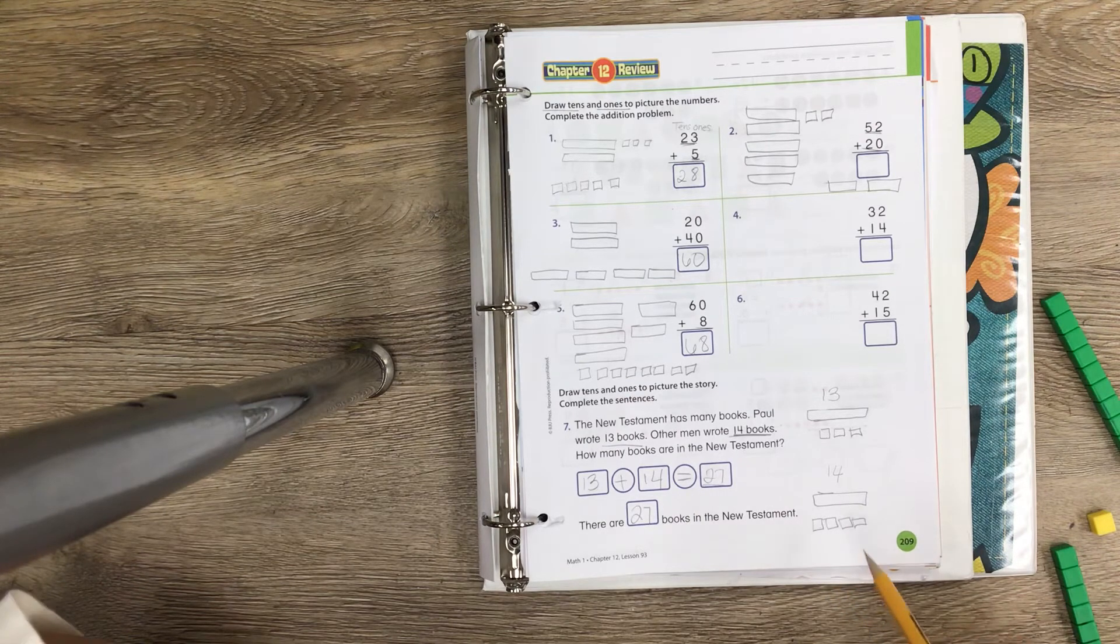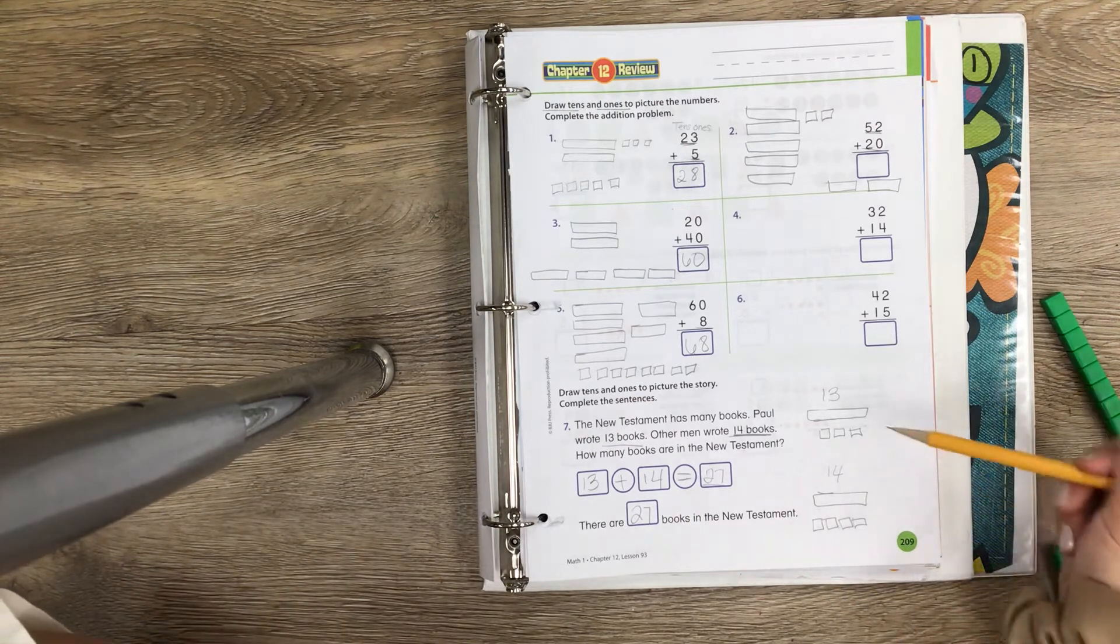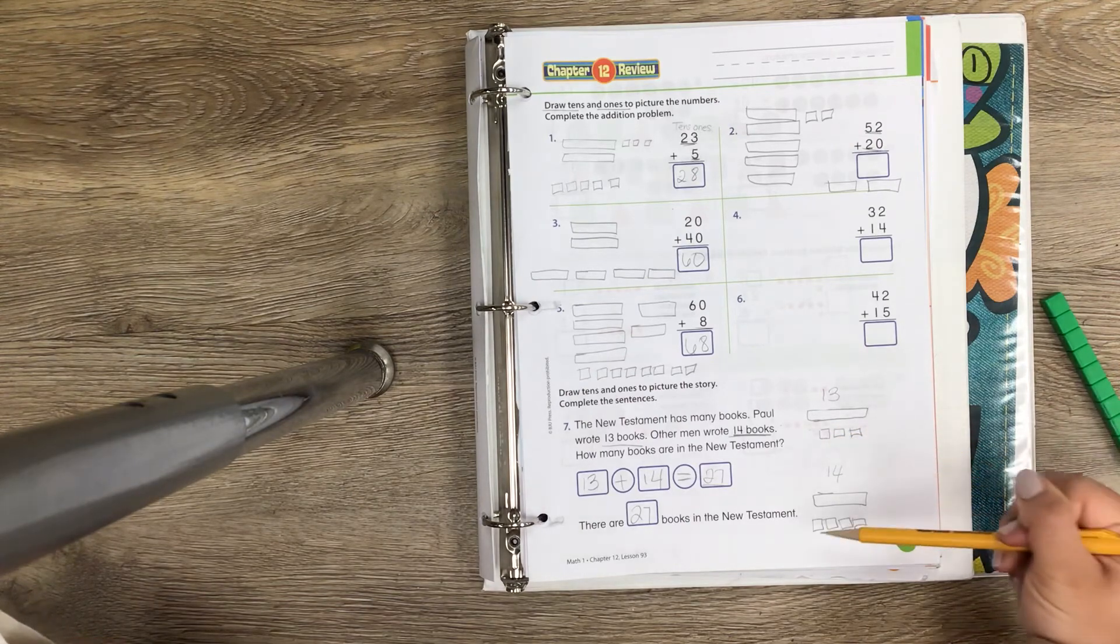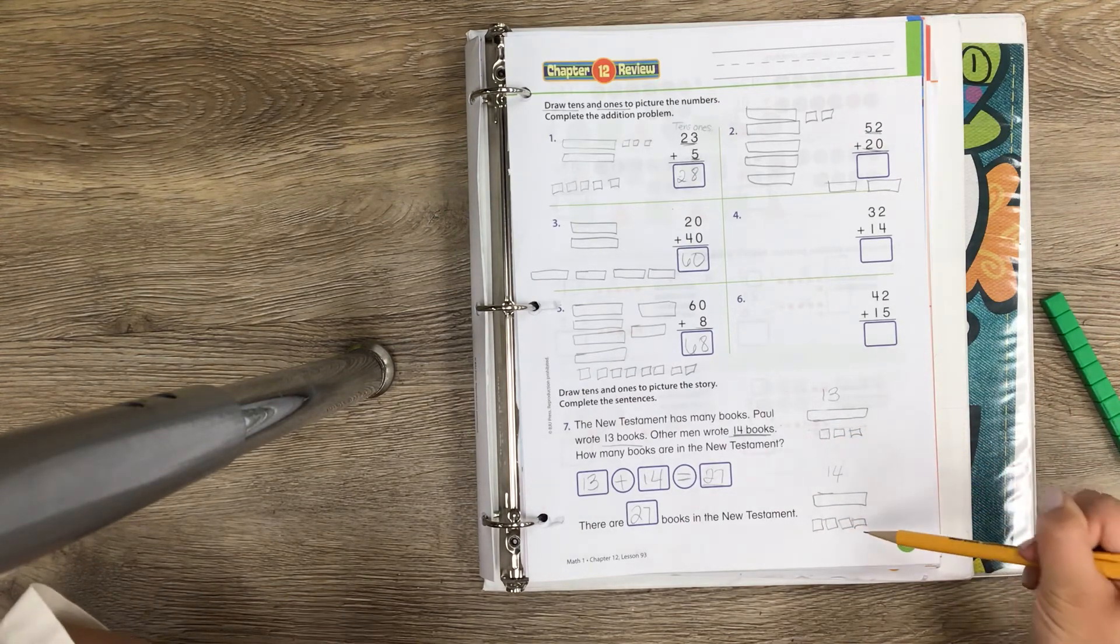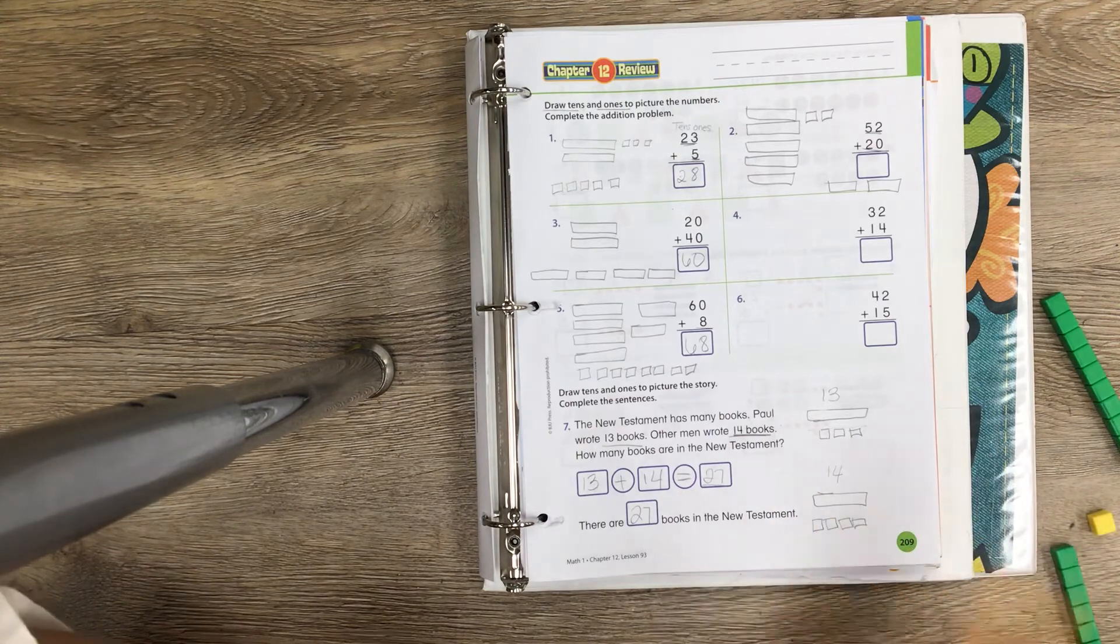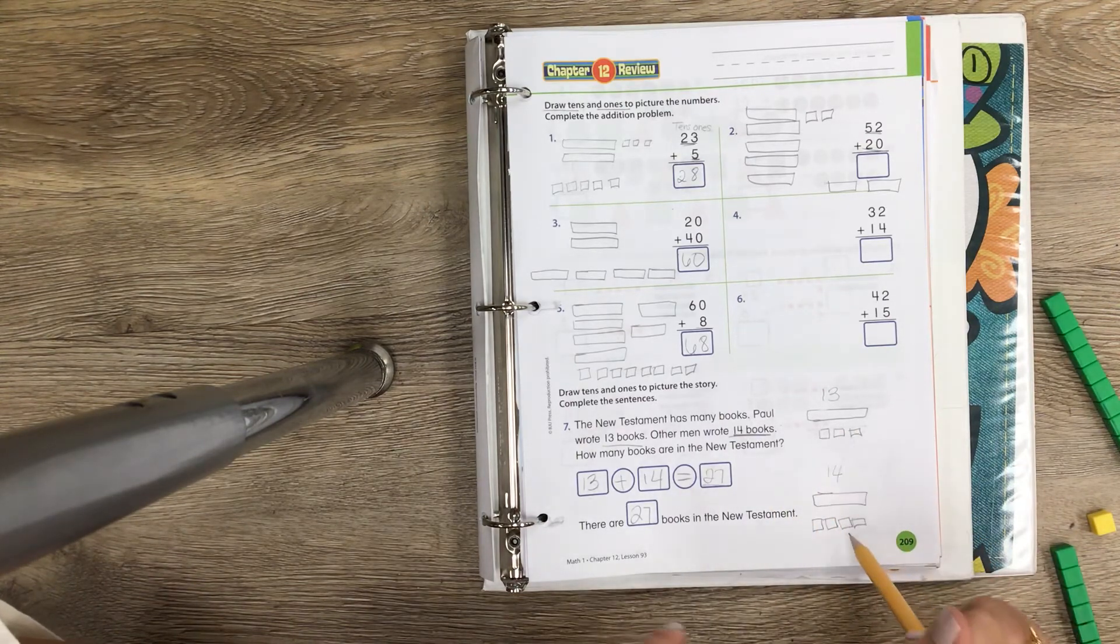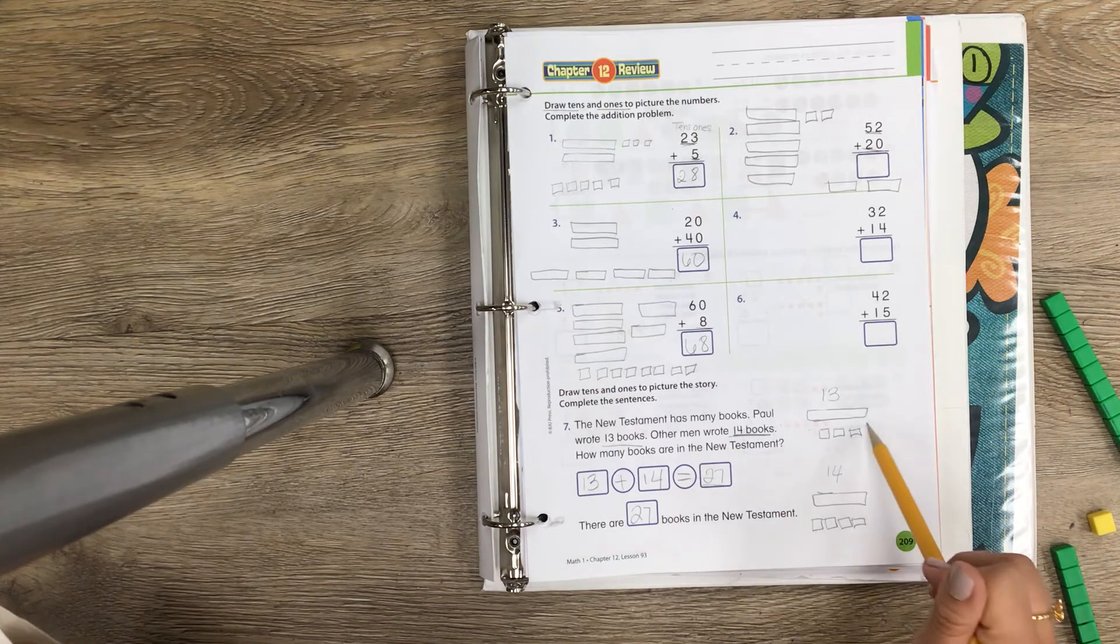Equals 27, right? 13: 10, 11, 12, 13, plus 14: 10, 11, 12, 13, 14. How many do we have all together? 10, 20, 21, 22, 23, 24, 25, 26, 27. So I have 27 in total. So I made 13 and I made 14, and then I added them all up and I got 27.